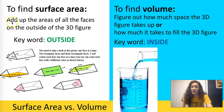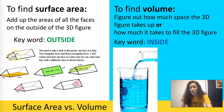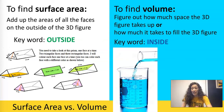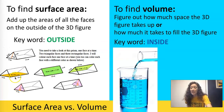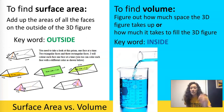To find surface area you add up the areas of all the faces on the outside of the 3D figure — the key word here is the outside. So look at this example: I have a triangular prism here, and this face is highlighted in yellow, this face in green, this face in pink. You'd find the area of each face, add those all together, and that would be the surface area of this triangular prism. Remember, it's the outside of the figure.